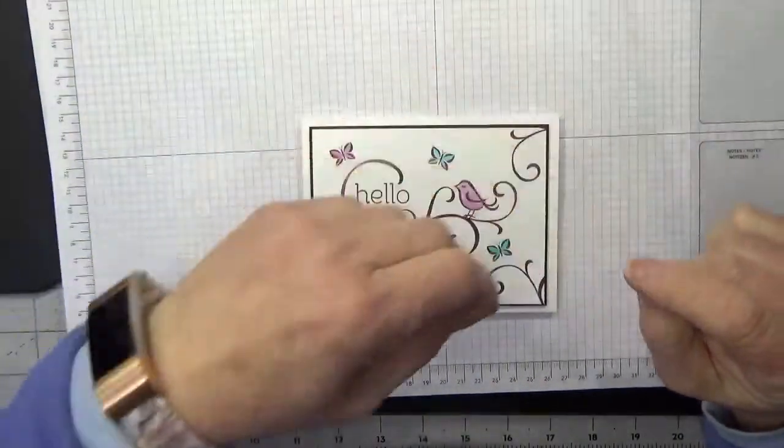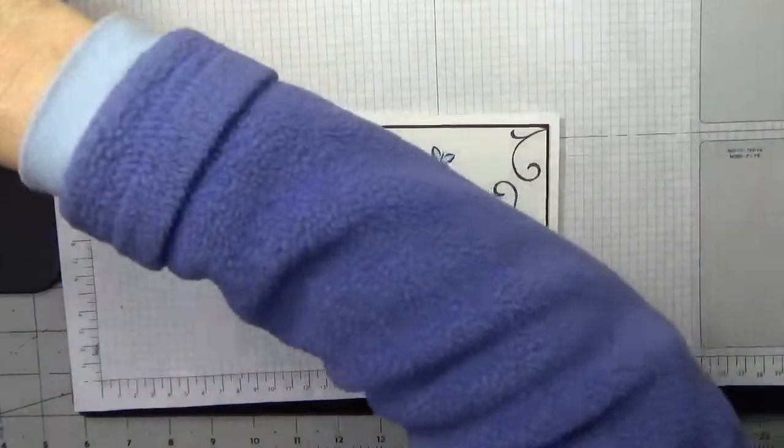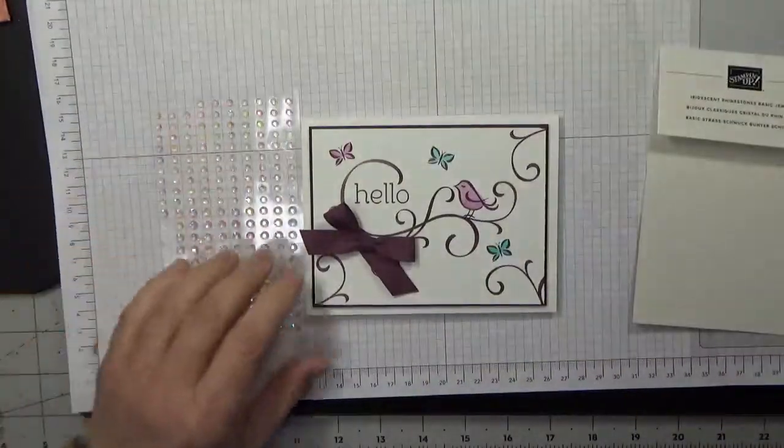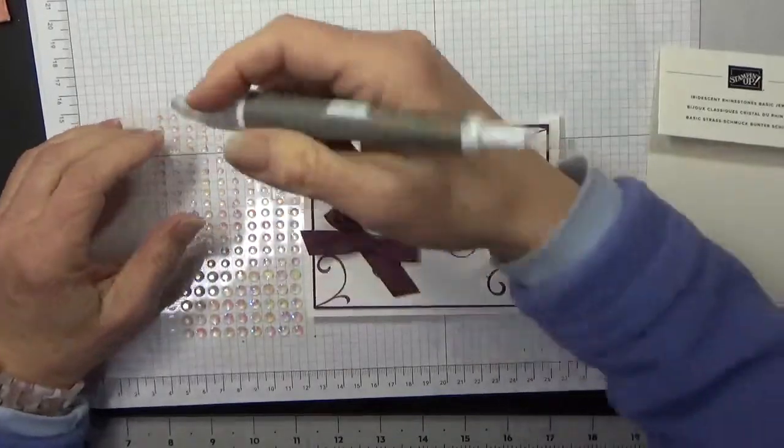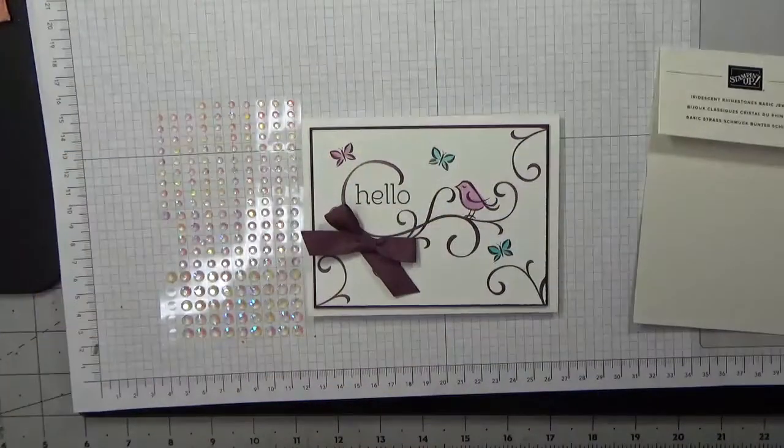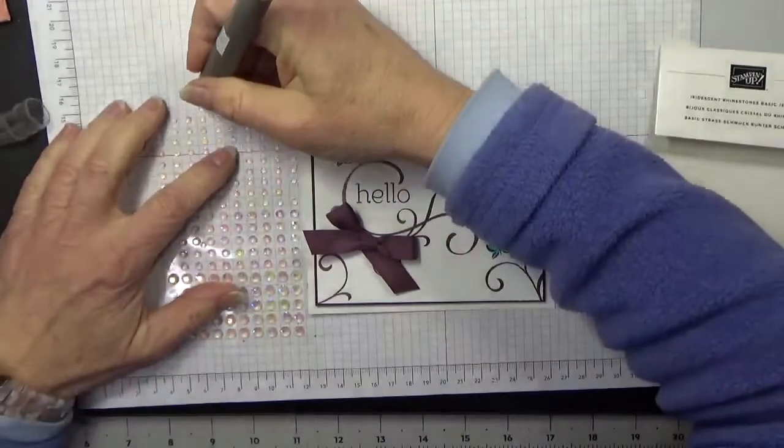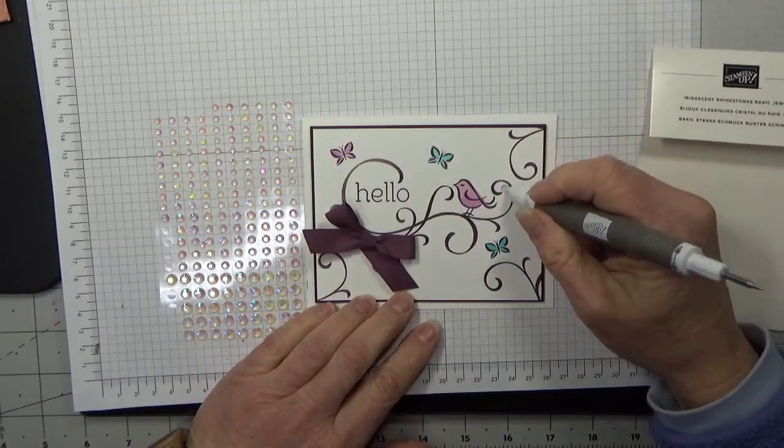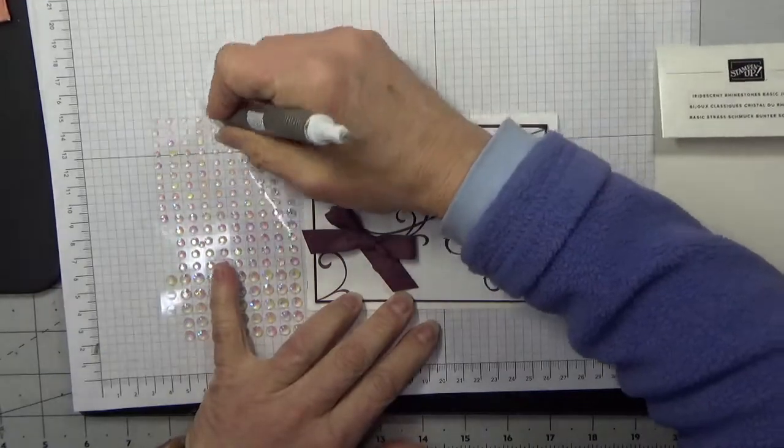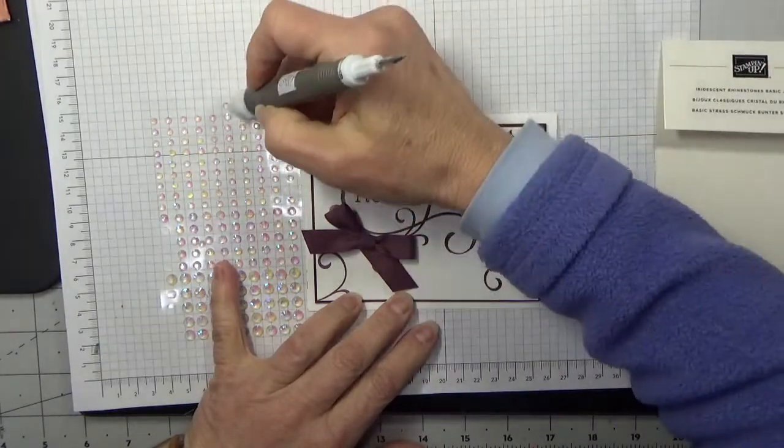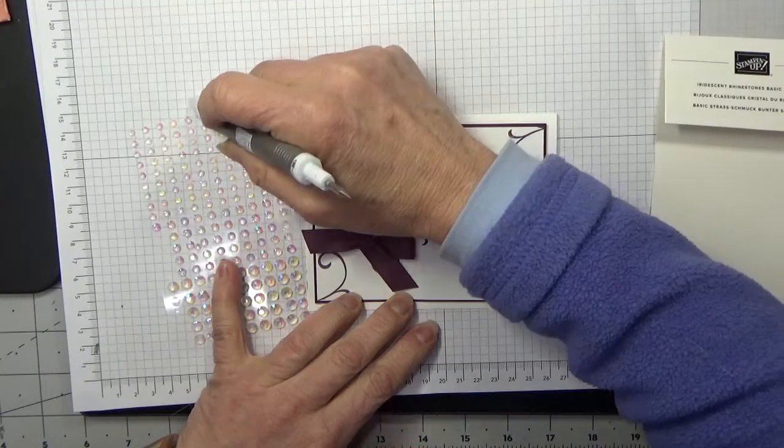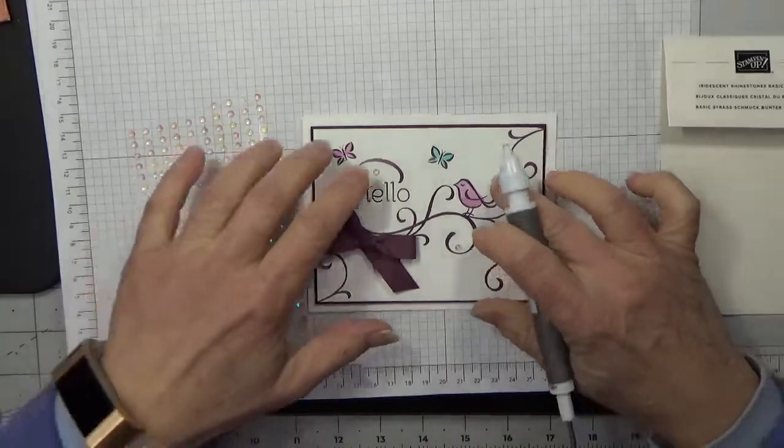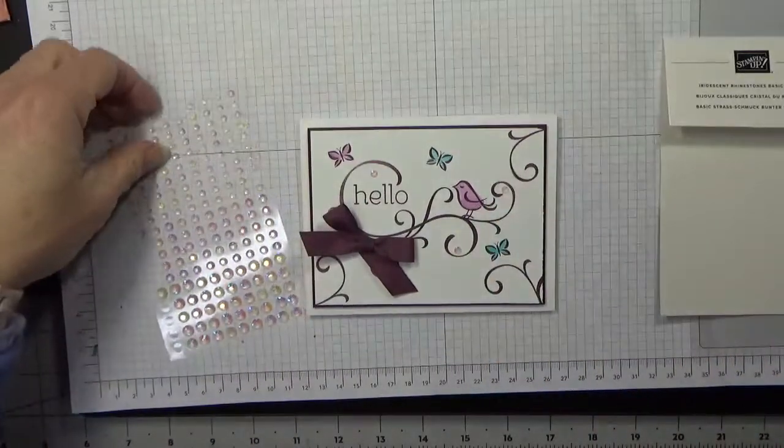The final thing we're going to use to just finish it off a little bit are the iridescent rhinestones. They're in the same spring catalog as the Sentimental Swirl stamp set. We're going to put a rhinestone there, one above the hello, and one down there. And there's our card. Quick, simple, easy card.